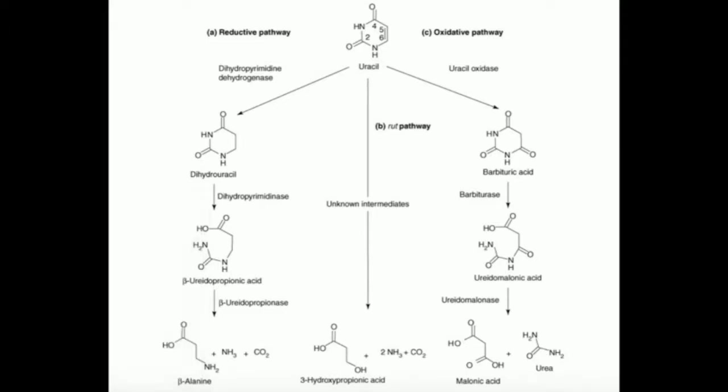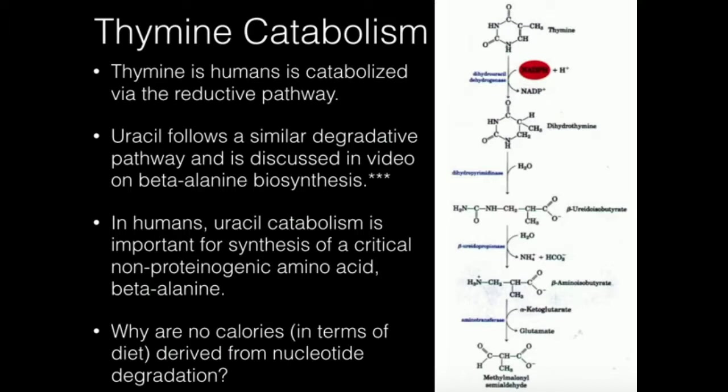Because we have this extra methyl group here, this is not beta-alanine, so we're going to have to deal with this a little bit differently. We're going to transaminate beta-aminoisobutyrate to make something called methylmalonyl semialdehyde. This looks dangerously close to methylmalonyl-CoA — perhaps you've seen methylmalonyl-CoA in the remainder of beta-oxidation for three-carbon fatty acids, particularly for propionyl-CoA. This molecule is just going to be catabolized ultimately into that pathway for propionyl-CoA.